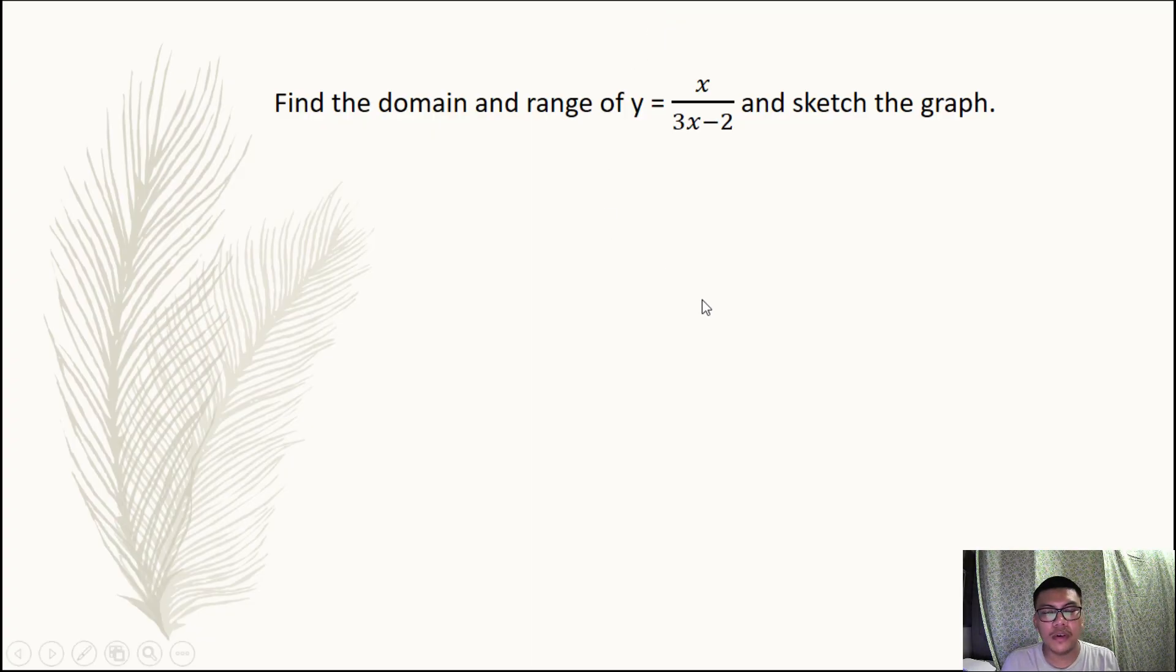Here's another example for a rational function. Find the domain and range of y equals x all over 3x minus 2 and sketch the graph. For domain and range, we're going to solve for the value of x that will make our denominator equal to zero.